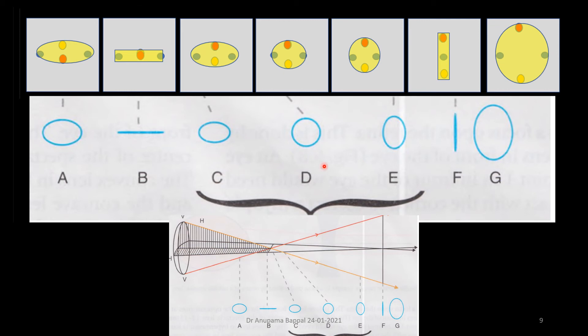At C, D, and E, the images are quite circular. So this is called a circle of least diffusion. And at G, it is vertically oval.